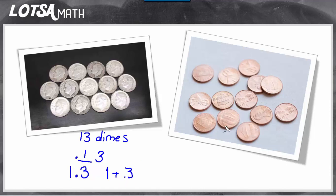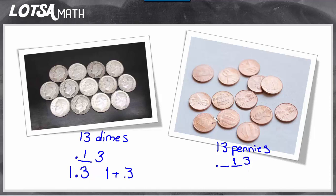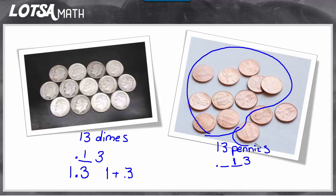The same thing applies to the pennies. Here we have thirteen pennies. You couldn't write a thirteen in the hundredths place — you'd either squeeze two digits into one place or wind up with a digit in the thousandths place. So you have to think about it this way: thirteen pennies is really like one dime and three pennies, because ten pennies makes one dime. So you would put the one in the dimes place — even though it came from pennies, it equals the value of one dime — and leave the three in the hundredths place.